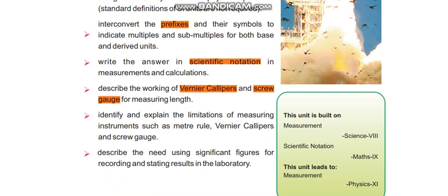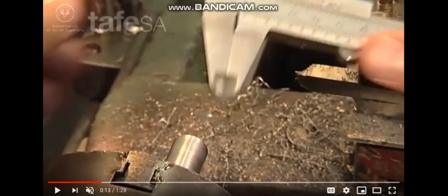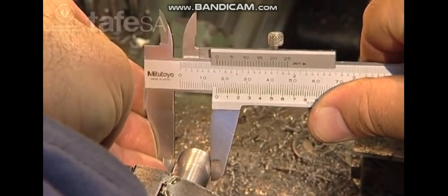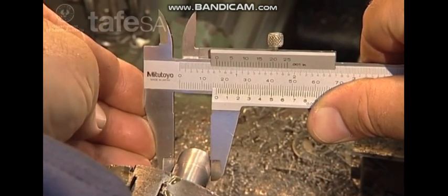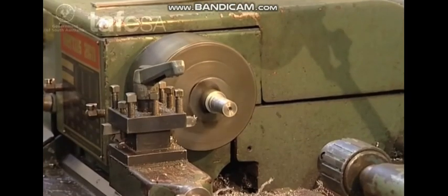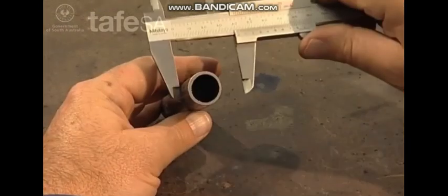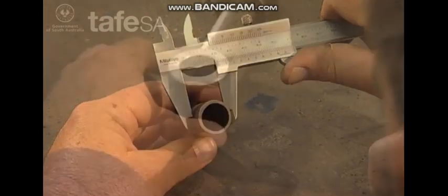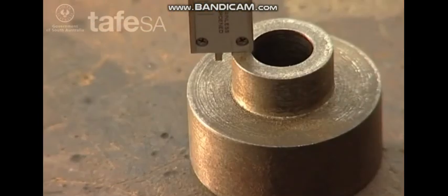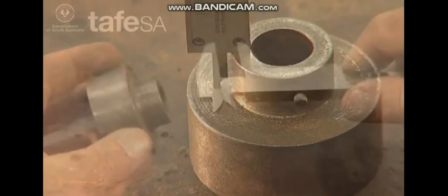This is Vernier Caliper. We can easily measure the outer and inner diameter. It has two jaws: outer and inner jaws. We can also measure depths.